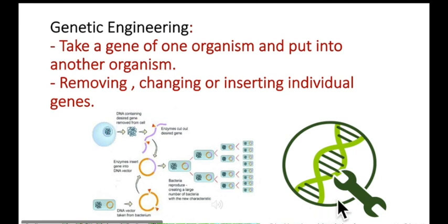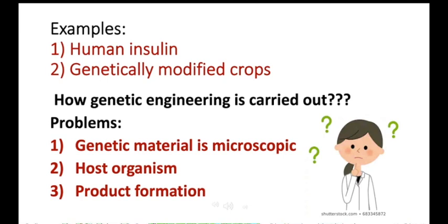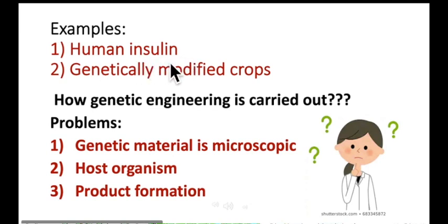We will discuss the process of genetic engineering with respect to two examples: number one, the production of human insulin, and number two, genetically modified crops, also called GM crops. Before genetic engineering, insulin was taken from cows and pigs. Insulin is a hormone found in our body that helps to reduce blood sugar levels, because high blood sugar levels can cause a disease condition called diabetes.